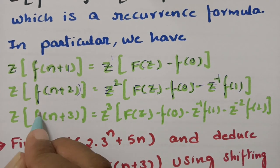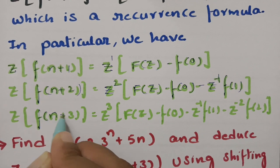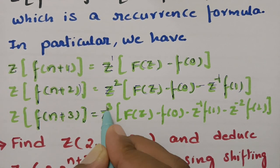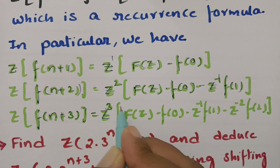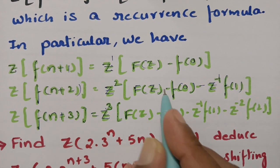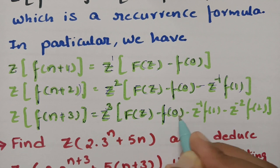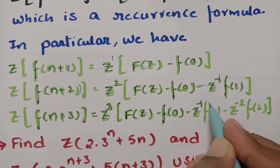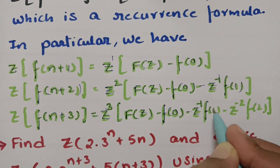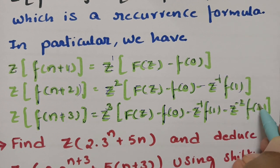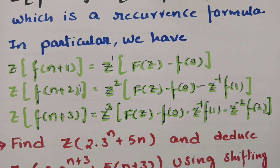If it is shifted towards the left side for 3 units, then this is z^3 into capital F(z) minus f(0) minus z^(-1) into f(1) minus z^(-2) into f(2). So this is about the shifting theorem or shifting property.